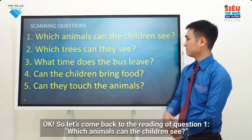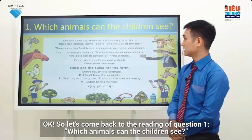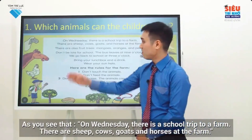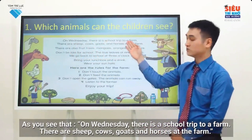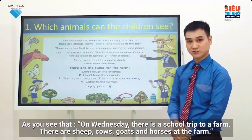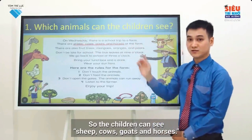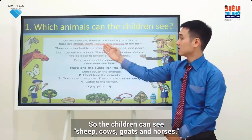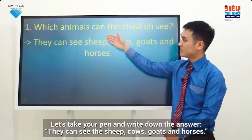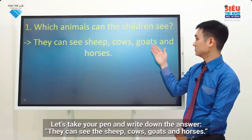Let's look at question one: which animals can the children see? On Wednesday there is a school trip to a farm. There are sheep, cows, goats, and horses at the farm. So the children can see sheep, cows, goats, and horses. Take your pen and write down the answer: they can see sheep, cows, goats, and horses.